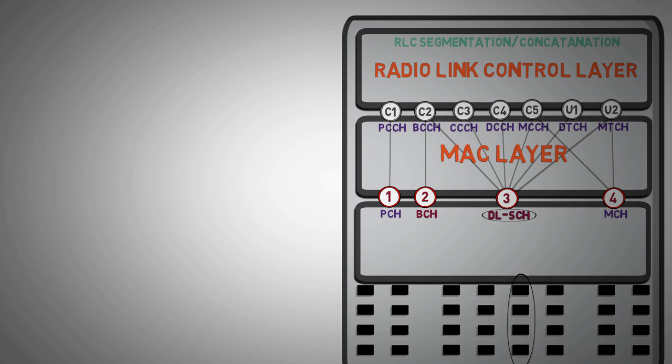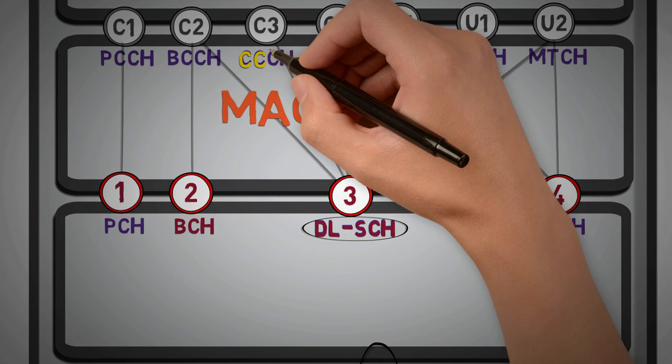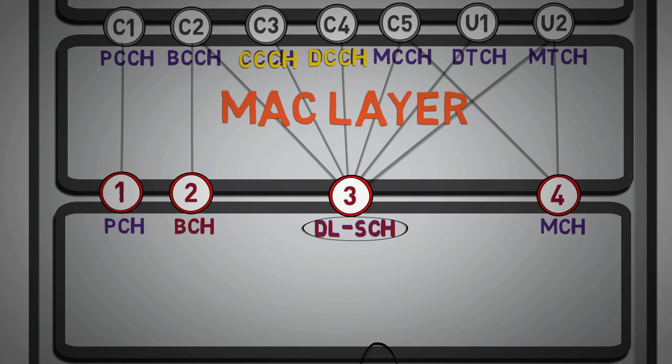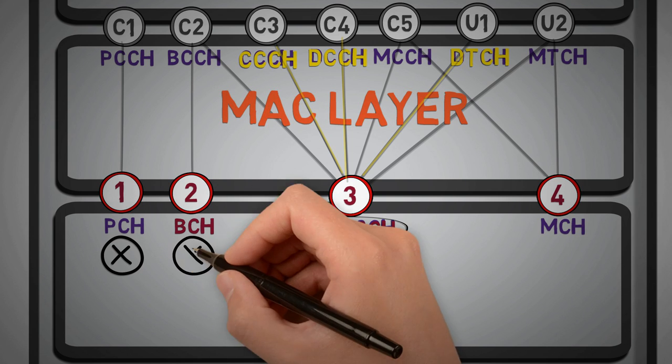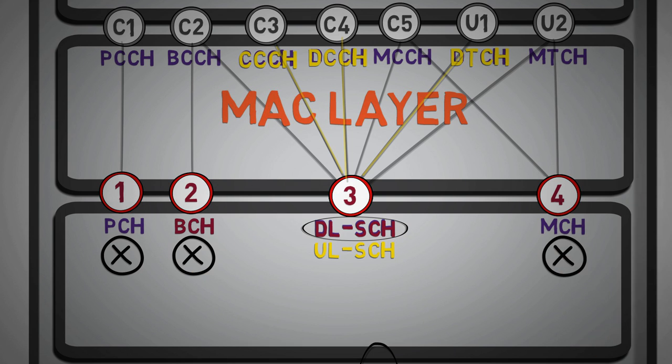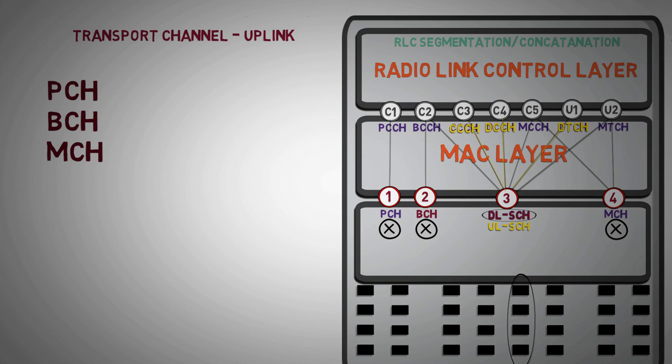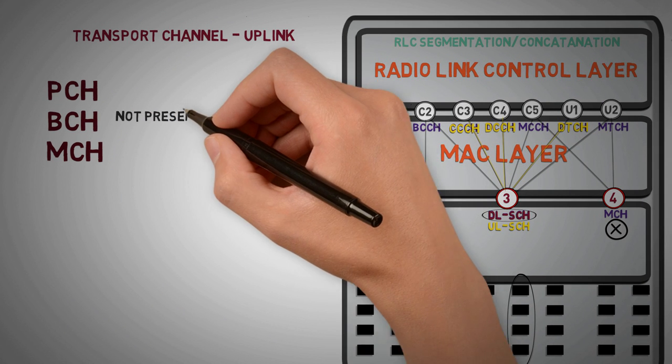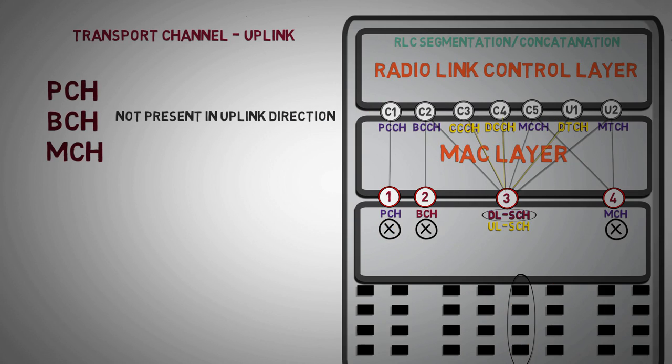The transport channels used in uplink are similar to downlink. The logical channels such as common control, dedicated control and dedicated traffic channels are mapped into the uplink shared channel. As there are no paging, broadcasting and multicasting messages in uplink direction, so this channel is not present in uplink direction.